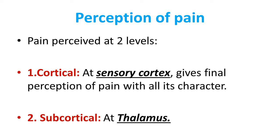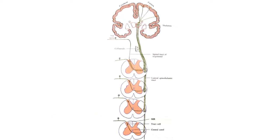Pain can be perceived at two levels: cortical and subcortical. At the cortical level, the sensory cortex gives the final perception of pain with all its characteristics. Pain is also perceived at the thalamus, so the sensory cortex is not absolutely essential. The sensory cortex is responsible for discrimination and decision-making in response to pain.